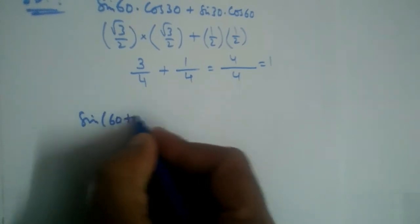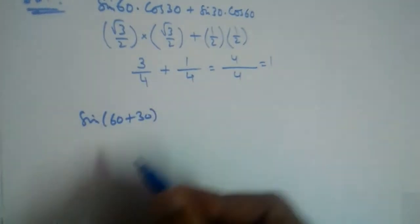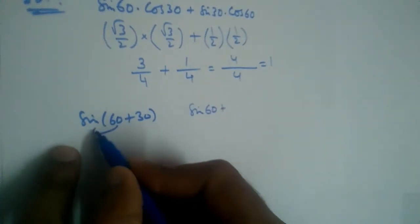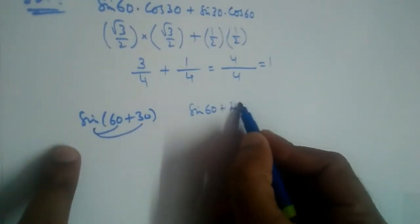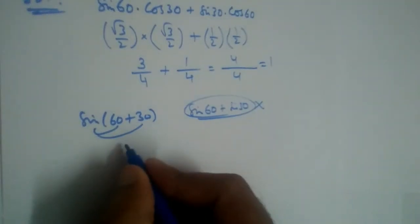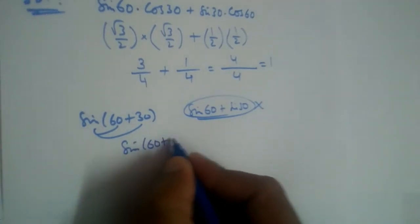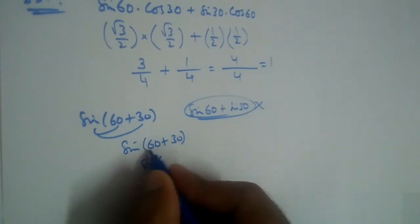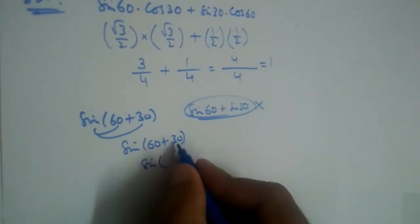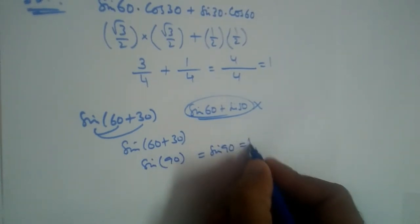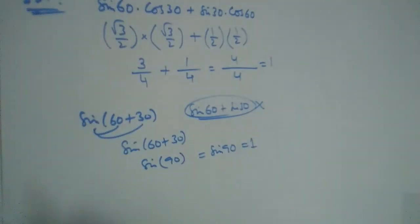Now what is the value of sin(60 + 30)? Let me tell you one thing: you cannot multiply it like this. You cannot write sin 60 and then write sin 30—this will not be correct in trigonometry. Instead, just add the angles which are in the brackets: 60 plus 30 is 90, so sin 90 is equal to 1. Both values are equal to 1.